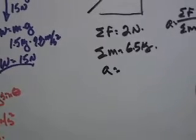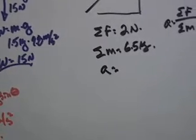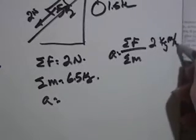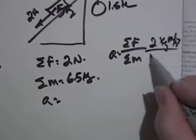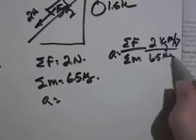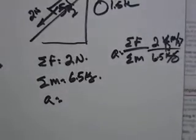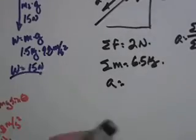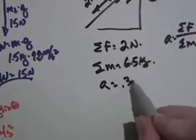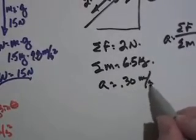So it's going to be 2 newtons, 2 kilogram meters per second squared, divided by 6.5 kilograms. And I'm going to get a final of about 0.30 meters per second squared.